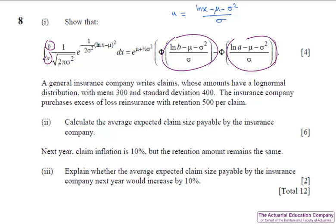In part two we're told we've got a lognormal distribution with mean and standard deviation so don't get caught out. Your first step will be to work out the parameters mu and sigma squared because you're going to need that for the formula from part one and we've got excess of loss reinsurance with a retention of 500 and we're asked to calculate the average expected claim size payable by the insurance company. Well for claims less than the retention limit we'll pay the full claim amount and for claims greater than our retention limit we'll just pay the retention of 500.